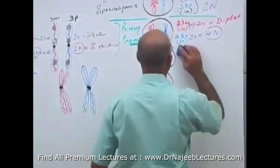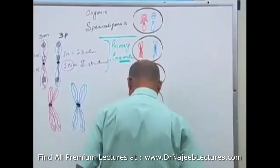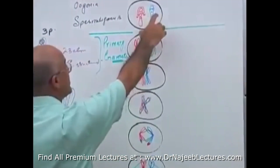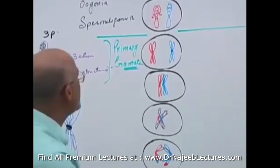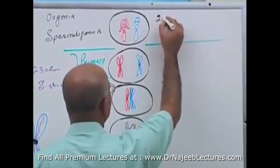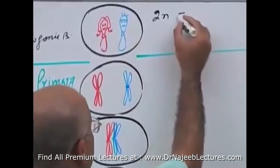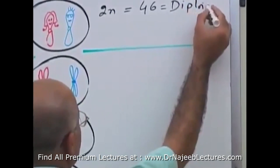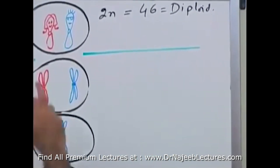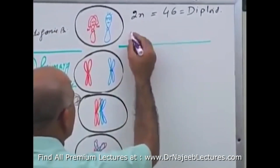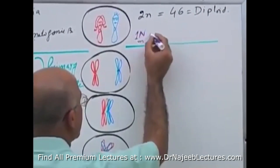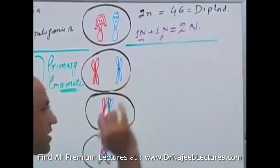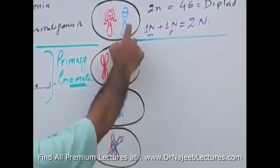Let me take a quick test of this concept. In the early germ cell — spermatogonia B — the number of chromosomes is 2 small n, with one small n from father and one small n from mother, equaling 46, which is the diploid situation. The amount of DNA: one capital N from maternal side plus one capital N from paternal side gives a total of 2 capital N.